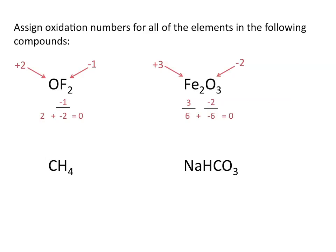Looking at our third example, remember that hydrogen normally has an oxidation number of plus 1 when combined with nonmetals. When we multiply this oxidation number by the total number of atoms of hydrogen in the molecule, this gives us a total of positive 4. Remembering that the sum of the oxidation numbers must be equal to 0 for a neutral compound, we know that the oxidation state for carbon must be negative 4. So each hydrogen atom has an oxidation state of plus 1, and the carbon atom has an oxidation state of minus 4.